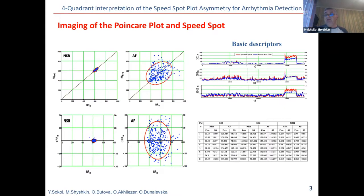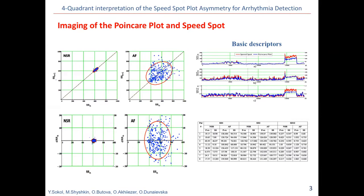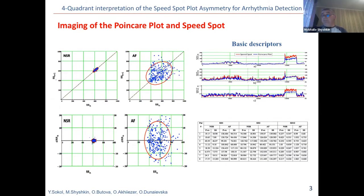Moreover, an additional descriptor D12 is the ratio of the first two. As can be seen from the expression for the speed-spot, these descriptors are calculated as the standard deviation of the corresponding variable. Slide 3 shows images of spots for two states: normal rhythm and ideal fibrillation state. You can see a significant change in the graph and, accordingly, in the main descriptors that characterize them. The same can be observed in the graph of behavior of the descriptors over time.